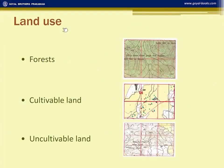Now we come to land use. In the survey sheet, some areas are shown in green, some in yellow, and some in white. Forests are generally shown in green, with descriptions such as 'fairly dense mixed jungle with bamboo,' 'open mixed jungle,' or 'dense forest.' If a question asks what type of forest is found, you state what is written on the map.